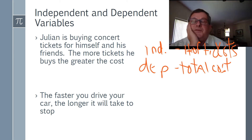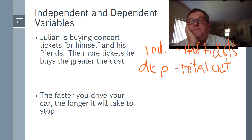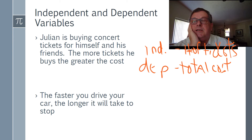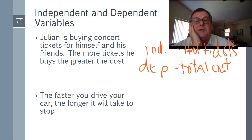For instance, if tickets cost $10 each, his total cost for one ticket is $10. But if he buys two tickets — the independent variable, the input — his total cost is $20. So the number of tickets purchased drives the total cost.